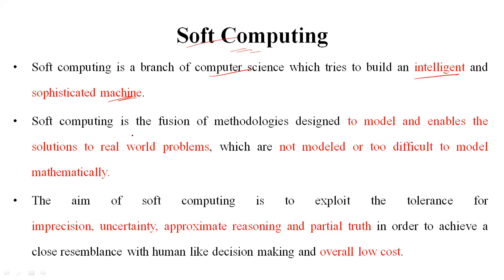What is this soft computing? It is a fusion of methodologies designed to model and enable solutions to real-world problems. When we take the example of the washing machine, the final outcome is to remove the dirt from the clothes and make it dry. The same thing — which is very complex — is done by the machine, which you developed from your intelligence. It is difficult to model mathematically, but it is working efficiently and giving a final output which is perfect.